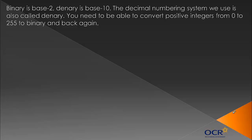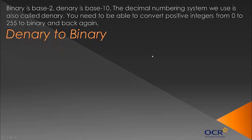Binary is base 2, Denary is base 10. The decimal number system we use is also called Denary — it's what we use, 0 to 9, those are our digits because it's base 10. You need to be able to convert positive integers — whole numbers from 0 to 255 — to binary and back again. They'll give you a random number, probably quite large, maybe 100-something or 80, and you'll almost certainly have to convert it to binary in your exam.